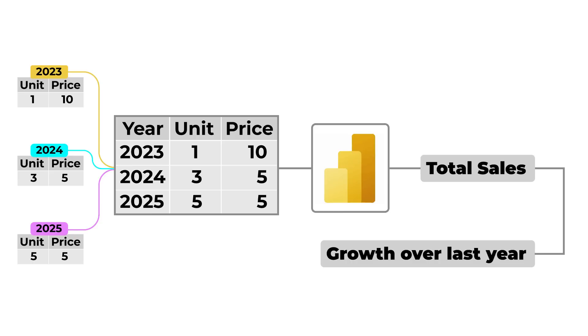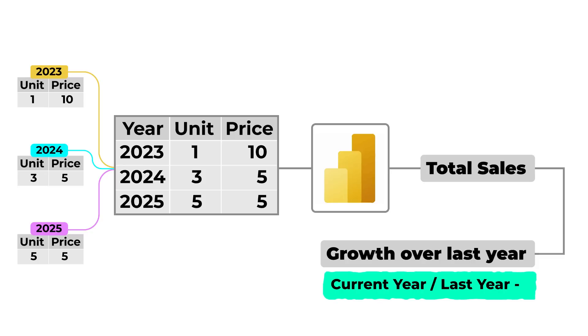Ideally, if you had thought about how to structure the data and pulled all years of sales data into one single table, then the growth-over-last-year calculation would not only be easy but also dynamic. That means you can write one growth-over-last-year calculation and use it for as many years of data as you would have. This is what I mean by modeling. This was a very simple example, but when you deal with more complicated datasets, this becomes absolutely imperative to pay attention to even before you start creating any visualization. This is the first and foremost thing I would teach myself: how to build great models in Power BI.